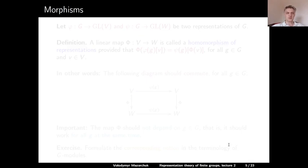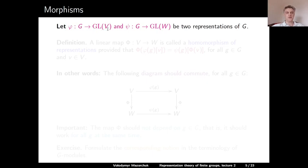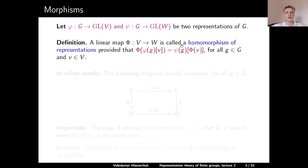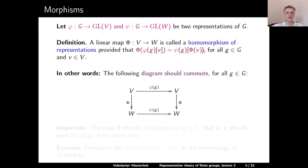Let us now define morphisms between modules. Let φ and ψ be two representations of G, where φ: G → GL(V) and ψ: G → GL(W). A linear map Φ: V → W is called a homomorphism of these two representations, provided that for any g ∈ G and any v ∈ V, applying Φ to φ(g)(v) gives the same result as applying ψ(g) to Φ(v). In other words, the following diagram should commute for all g ∈ G.